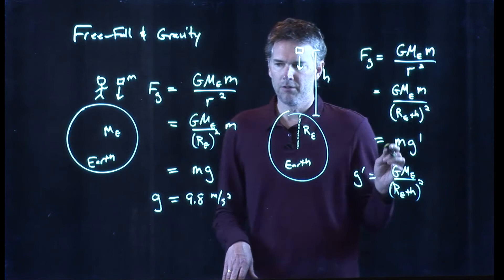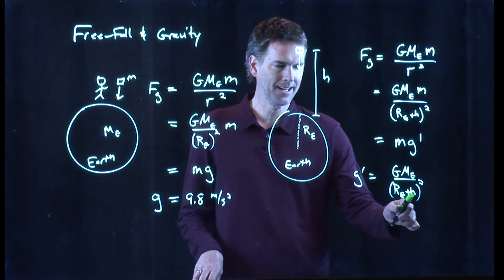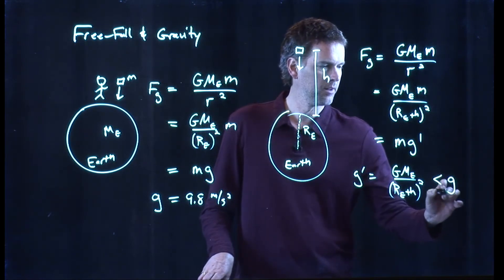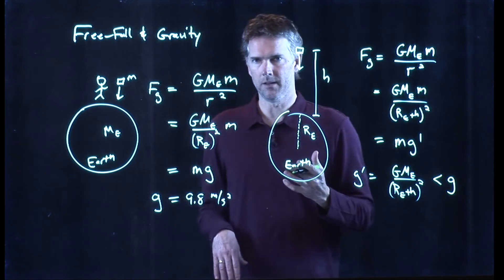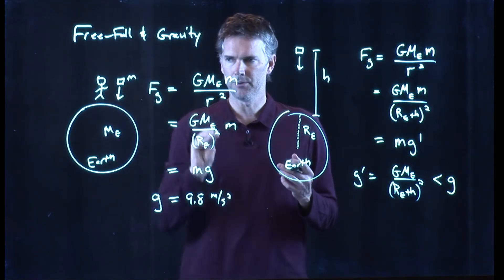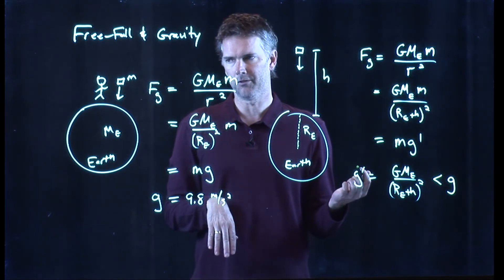That is certainly less than this g since we're adding something to the denominator. This has got to be less than g, and we know this already. The acceleration of objects up at altitude is certainly less than 9.8 meters per second squared.